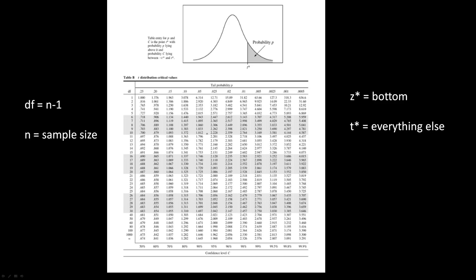Alright, so this is a special chart that you have to use. So for Z star values, it's very simple. You just look at the bottom of the chart and you line up with whatever confidence level that you want to use. So for example, if you want a 95% confidence level, you use the value 1.960.